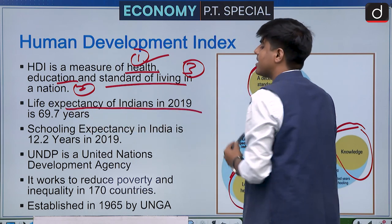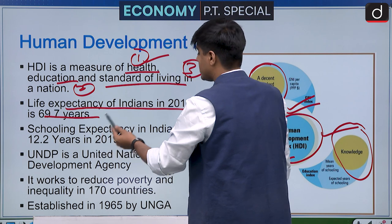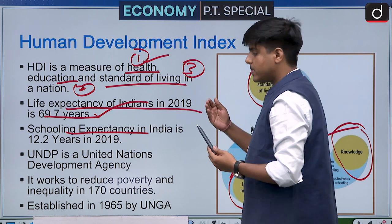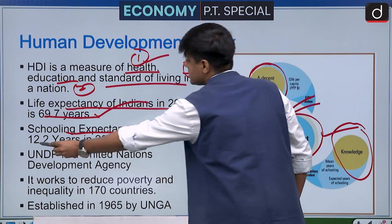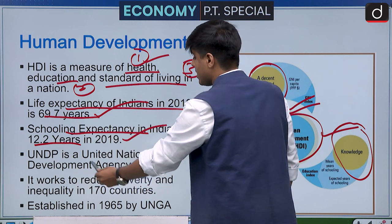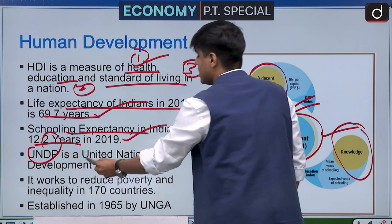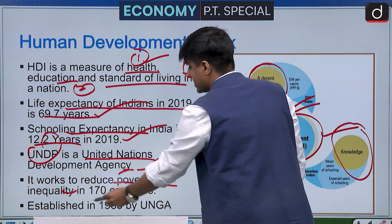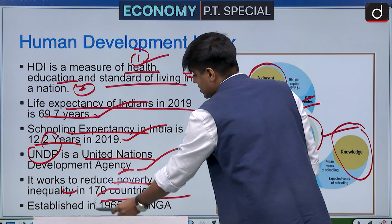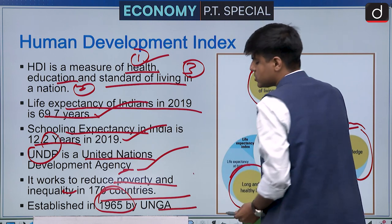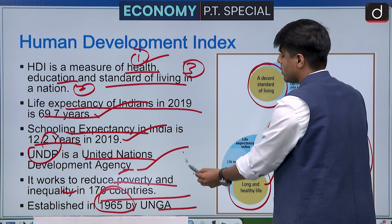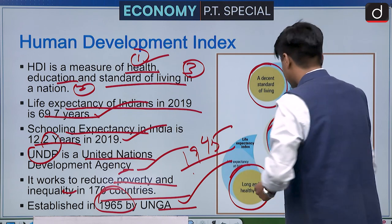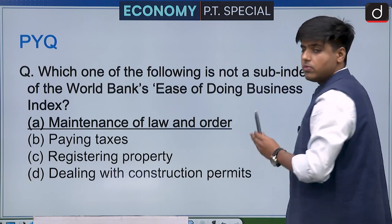As per the HDI index, the life expectancy of Indians in 2019 is 69.7 years, and the schooling expectancy is 12.2 years. UNDP — the United Nations Development Programme — aims to reduce poverty and inequality in 170 countries. It was established in 1965 by the UN General Assembly, not at the founding of the UN in 1945.